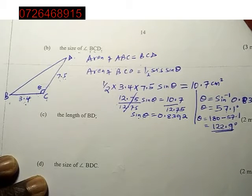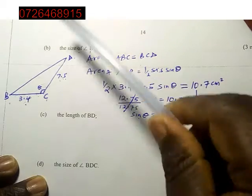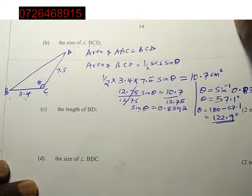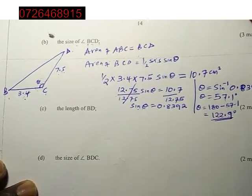That's already knowledge you need to use here. Now we've obtained the angle. The next thing we need to find is length BD. We want the length BD.